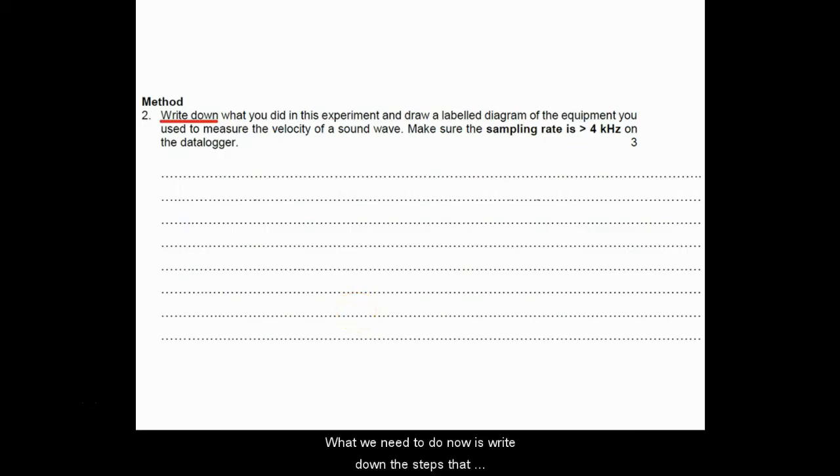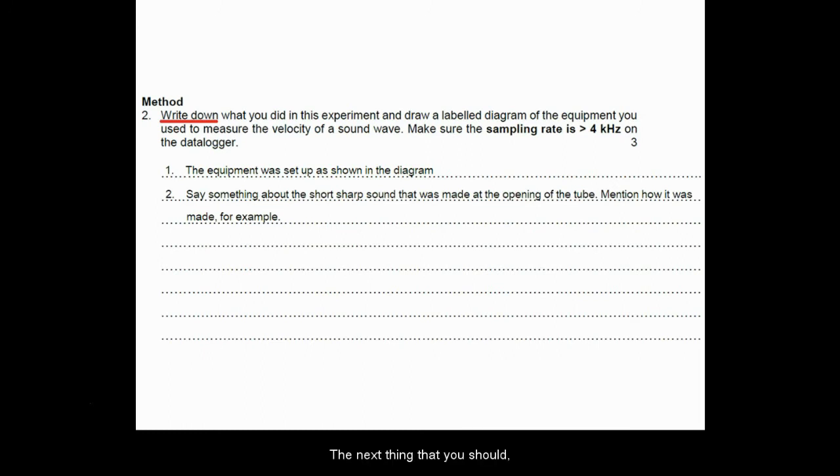Moving on, what we need to do now is write down the steps that were taken, and as I said, we do this in past tense. Usually the first step you can write in a method is: the equipment was set up as shown in the diagram. Now this takes many words away from the number that you have to write for your method, and that's a simple way of introducing your method. The next thing that you could say here is to say something about the short sharp sound that was made at the opening of the tube. Mention how it was made.